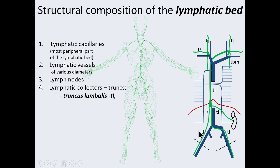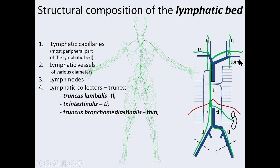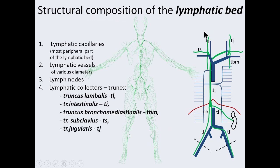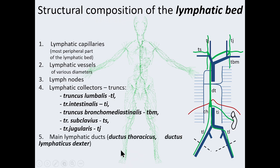The lymphatic trunks include: truncus lumbalis dexter and truncus lumbalis sinister (right and left lumbar trunks), truncus intestinalis, truncus bronchomediastinalis (right and left), truncus subclavius dexter and its counterpart on the left side, and truncus jugularis dexter and truncus jugularis sinister. The last component is the main lymphatic ducts: ductus thoracicus and ductus lymphaticus dexter.